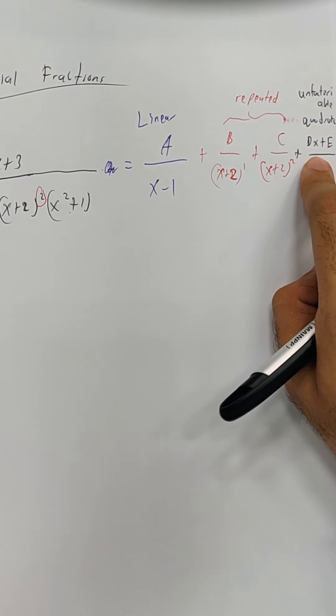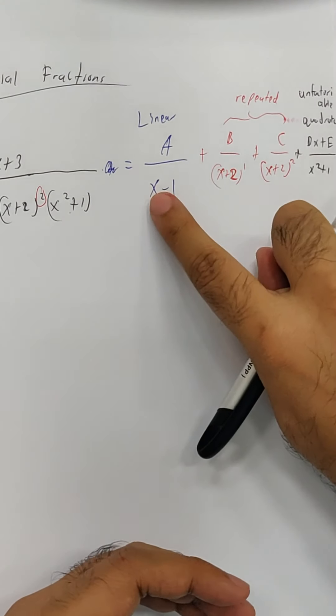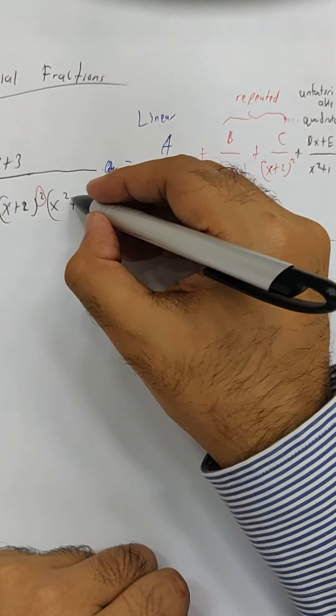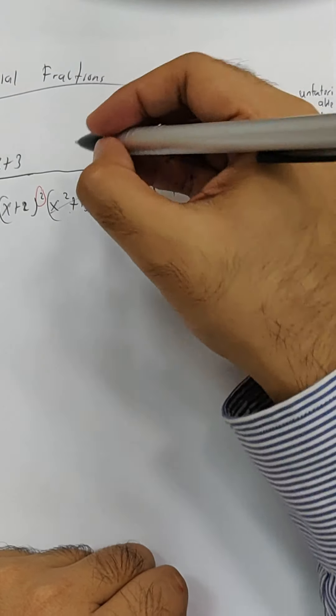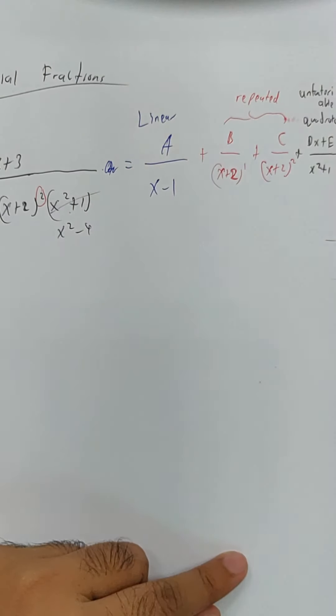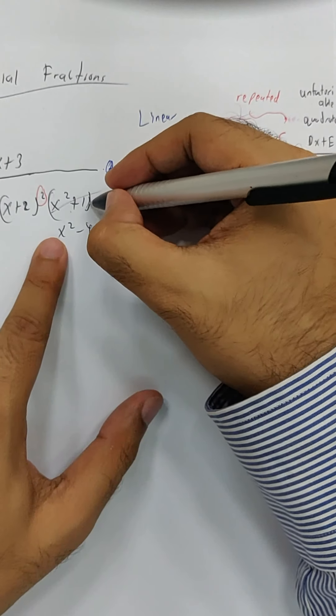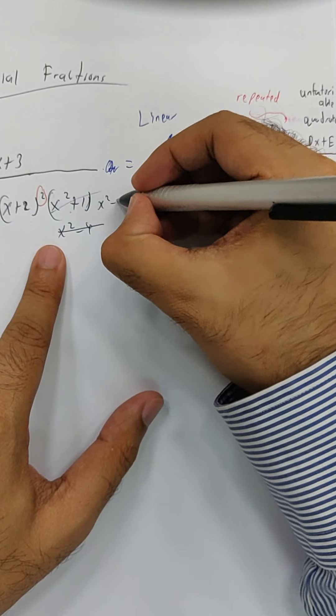What happens if I can factorize it, sir? I got myself linear. Okay, I'll show you an example. Let's say we don't get x squared plus 1, but we got ourselves instead x squared minus 4. What will it be? Let's say there's one more. We have this, and then we have one more: x squared minus 4.